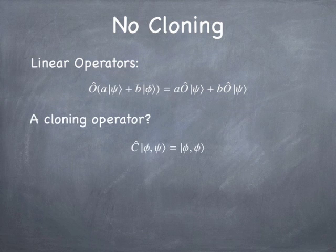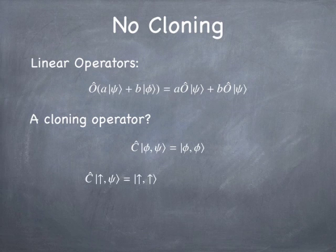So if you imagine the theoretical possibility that someone could invent a cloning operator — an operator that took a state of two particles, one in state phi and one in state psi, and operated such that when it finished, you got two particles in the same state phi — effectively cloning the quantum state phi and forcing the second particle into that state. Is it possible? Let's take a concrete example. Say we have a particle that's spin up and another particle in some arbitrary state. We could imagine an operator that, applied to that initial state, would produce as output a state where both particles were spin up, regardless of the condition of the second particle initially.